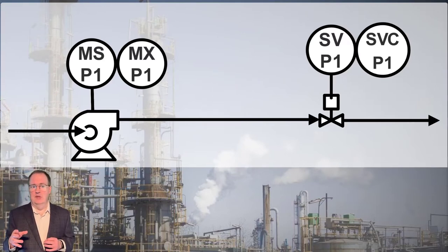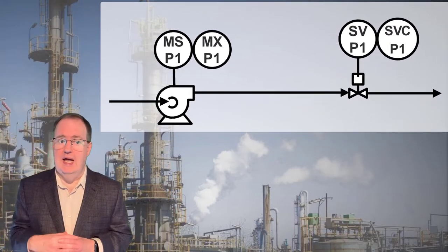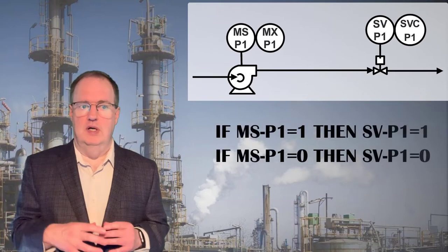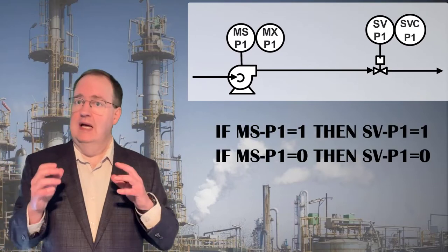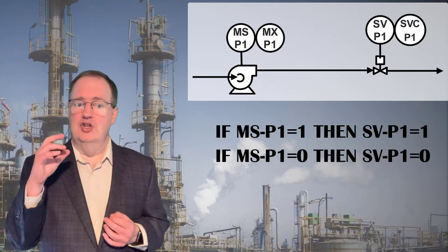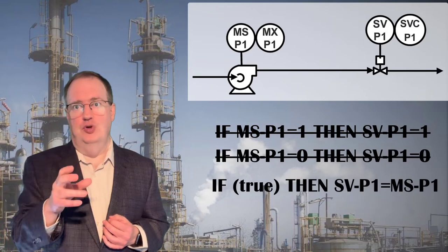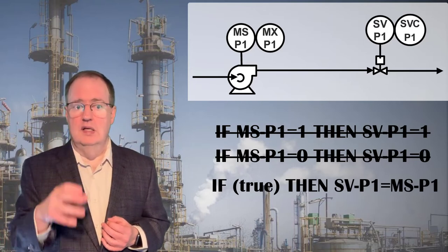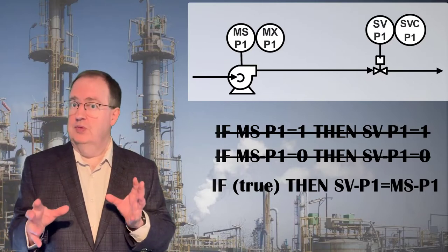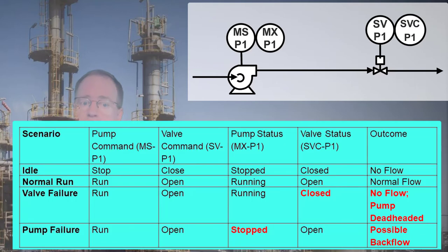We need the valve to open when the pump starts and close when the pump stops. This is accomplished by two constraints: MSP1 is the command we send to the pump to start or stop, and SVP1 is the command to the valve to open or close. We can shrink these two constraints into one: 'if true' just means the constraint will always act, so the command to the valve will always equal the command to the pump. Is that enough?